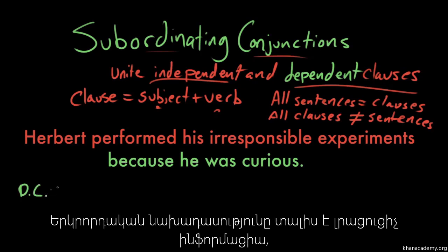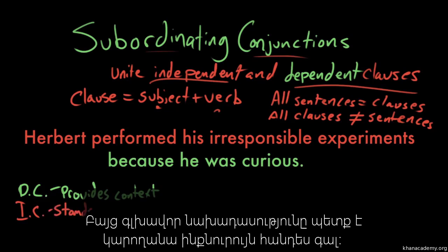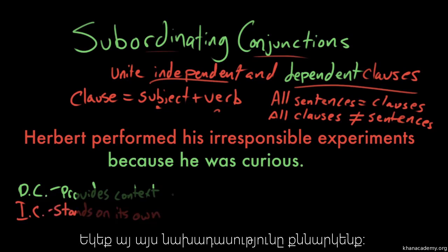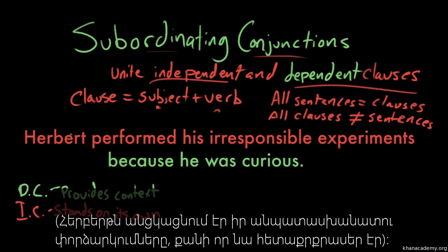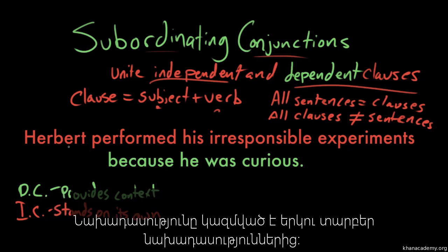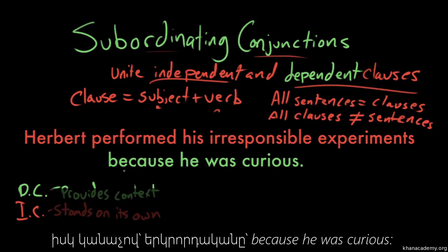What a dependent clause does is provide extra information that isn't necessary to the understanding of the sentence. But an independent clause has to be able to stand on its own. So let's take a look at this sentence here: Herbert performed his irresponsible experiments because he was curious. This sentence is composed of two clauses. In red, we've got this independent clause: Herbert performed his irresponsible experiments. And in green, we have this dependent clause: because he was curious.